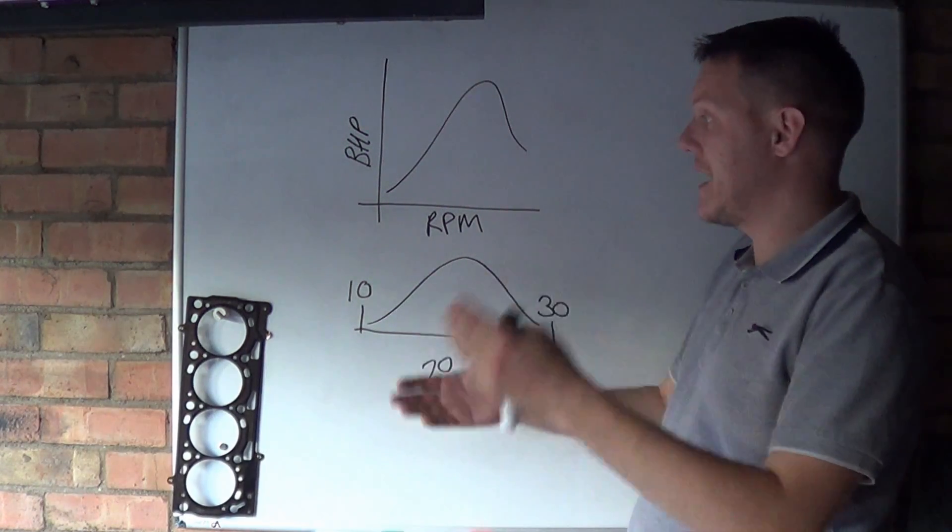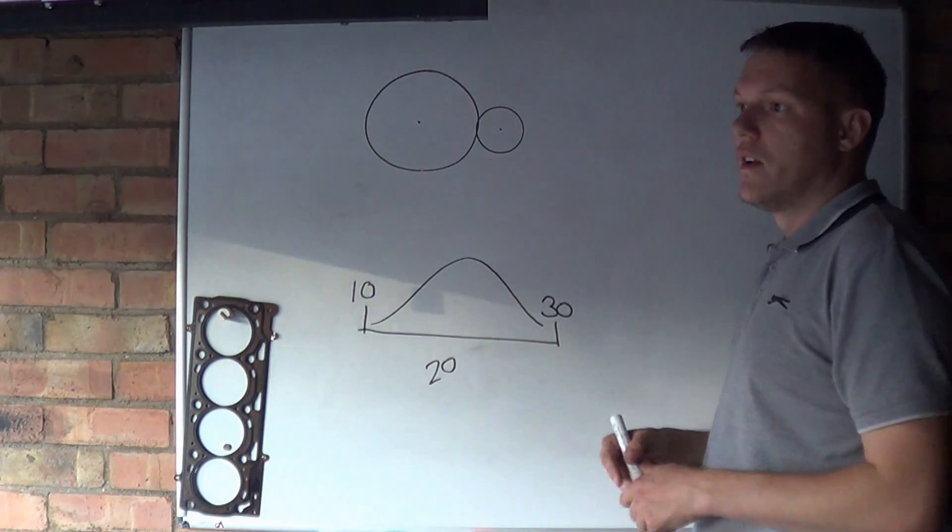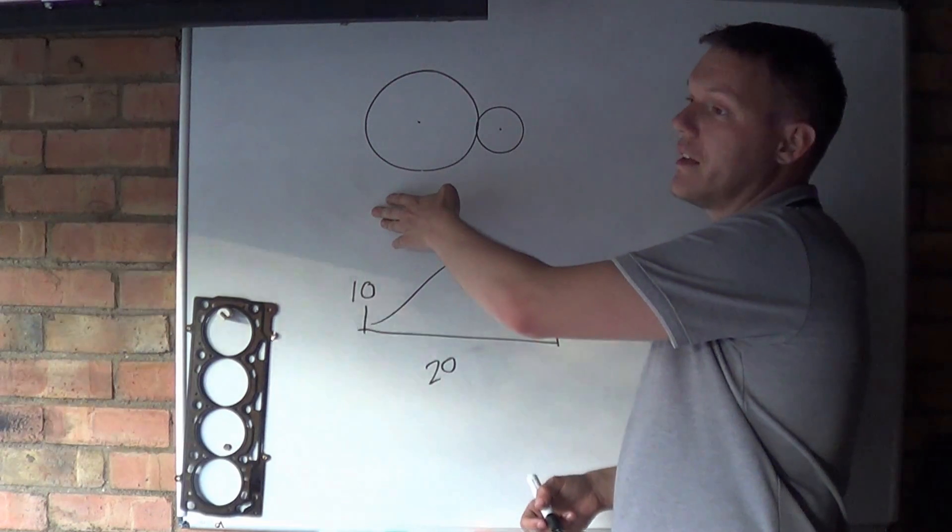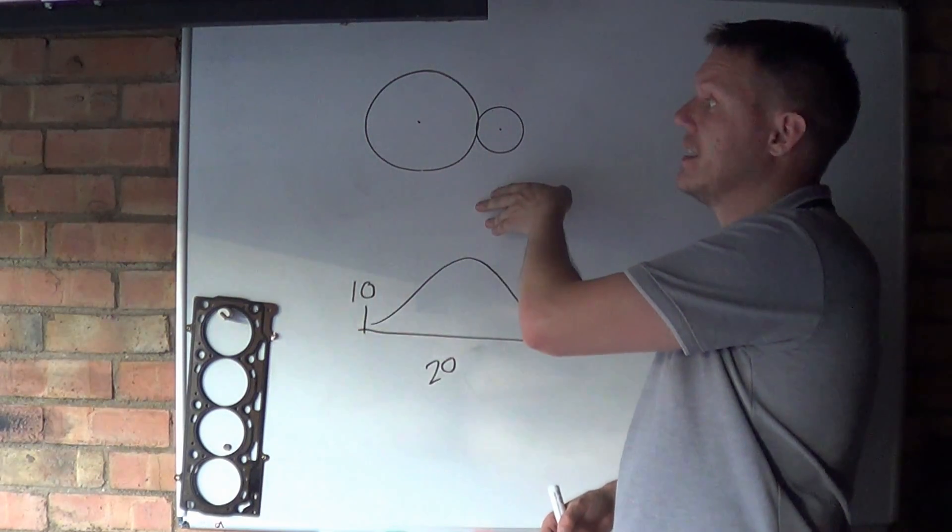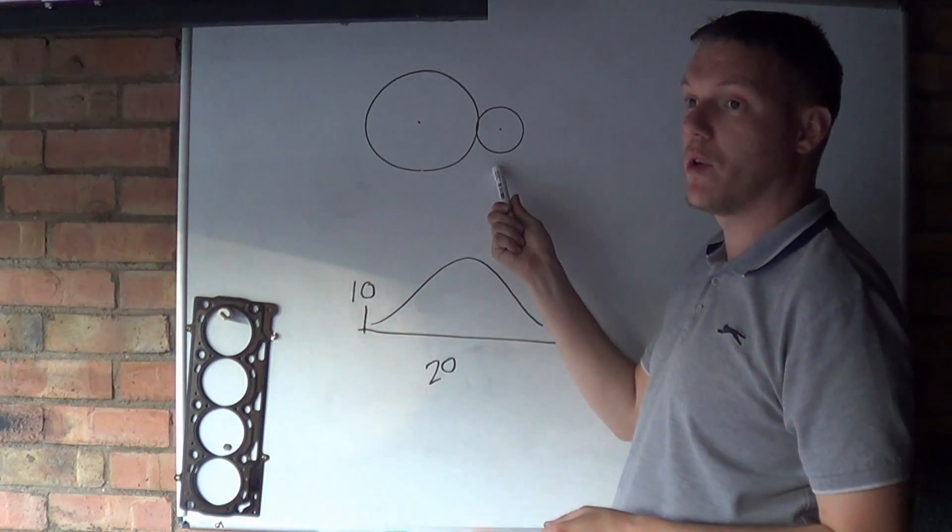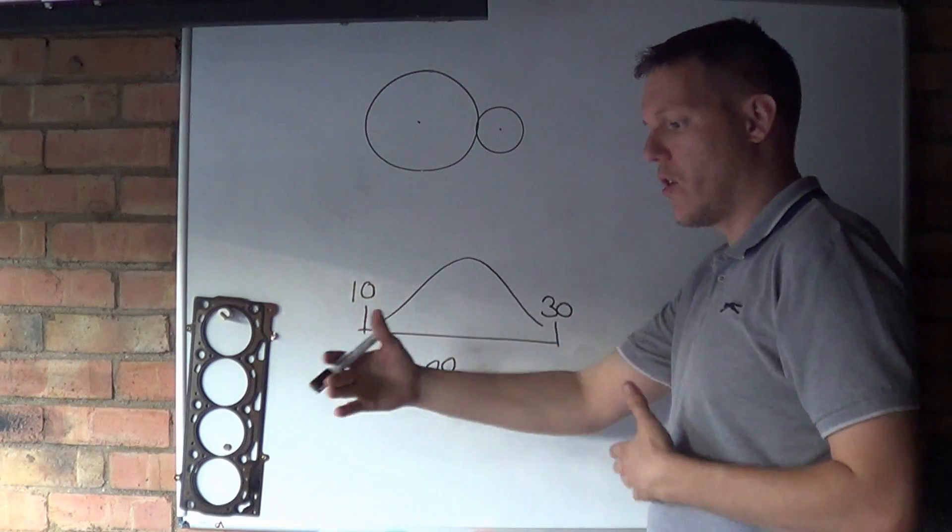So what we can do is we can employ a gearbox to help us get above this 30 mile an hour speed limit. We employ an exchange torque for speed gear setup where the driving gear is bigger than the driven gear. So you've got to think about like a push bike, you get your cogs and you set your derailleur and all that nonsense.